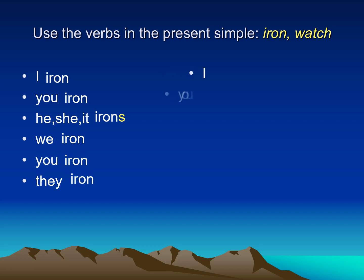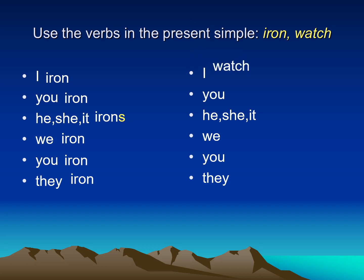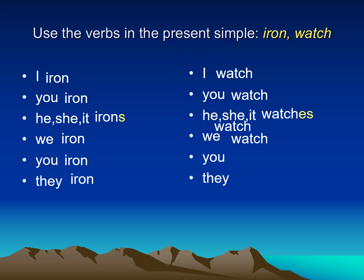What about 'watch'? With I and you, I keep the verb as it is — I write 'watch'. But with he, she, or it, I have to add S. However, here the verb ends in CH, so I add ES — it becomes 'watches'. With we, you, and they, I keep the verb as it is without changing anything.